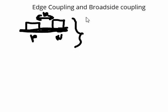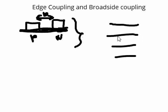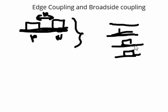Now, what is broadside coupling? In some cases, let us assume we have several layers. We take two layers where there are traces immediately underneath on those layers, and then they run in parallel. We can have this kind of coupling for differential traces if required, but it is very less used. This kind of coupling, where coupling happens between traces routed on different layers, is called broadside coupling.